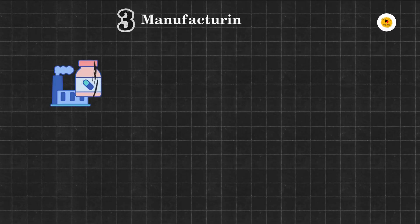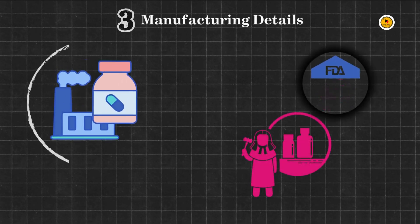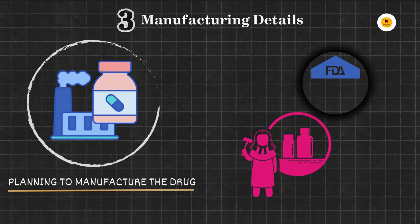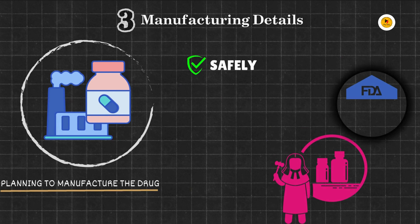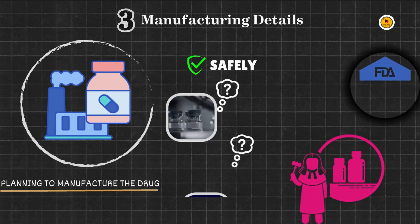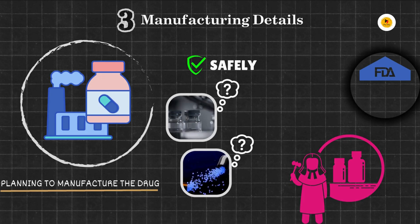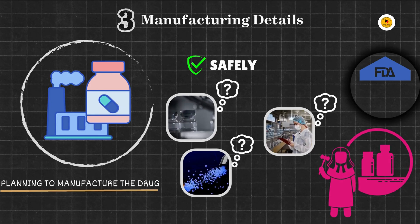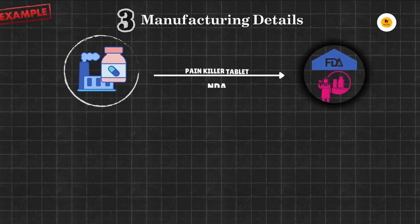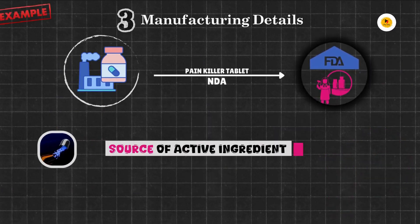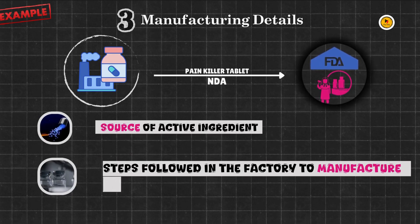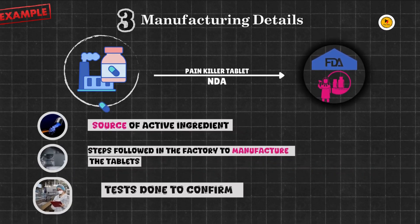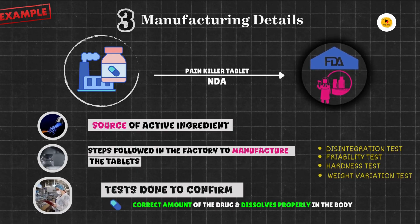The third important section of the New Drug Application is Manufacturing Details of the Drug. The FDA needs to know how the pharmaceutical company plans to manufacture the drug safely and consistently before approving it. This section includes information about how the drug is manufactured, where the active ingredient and other ingredients used in the drug formulation come from, and the quality control steps in place to ensure that every batch of the drug has the same consistency. For example, for a painkiller tablet, the company explains the source of the active ingredient, the steps followed in the factory to manufacture the tablets, and tests done to confirm that every tablet has the correct amount of the drug and dissolves properly in the body.